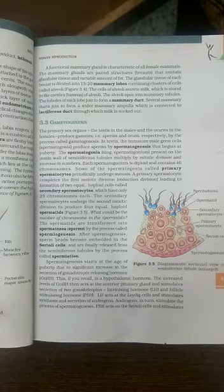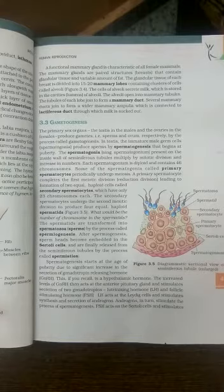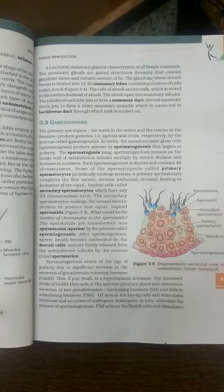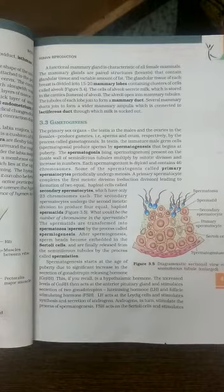From the tubule, milk goes to the mammary duct, and from many mammary ducts they join to form a common ampulla which connects to the lactiferous duct. Remember: mammary tubule, then mammary duct, then mammary ampulla.